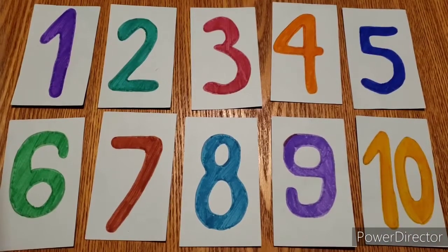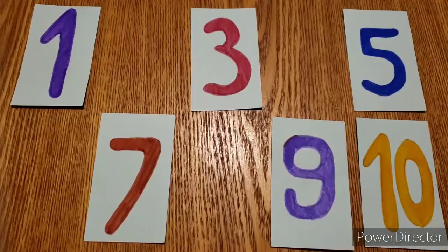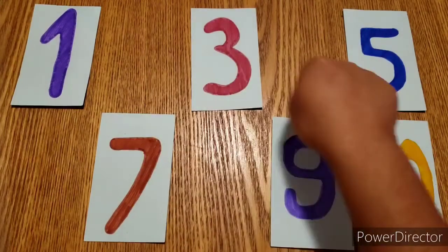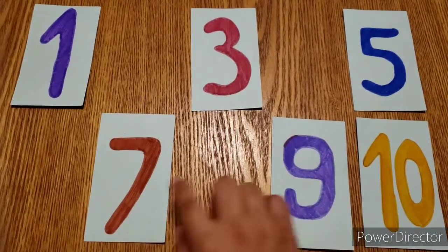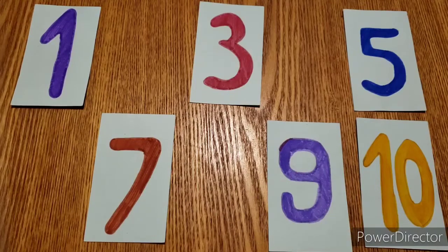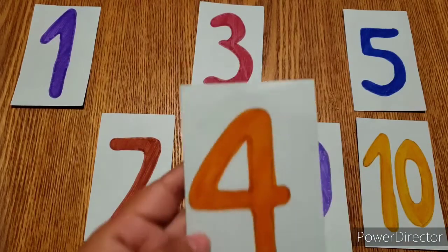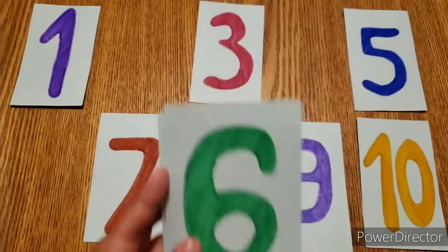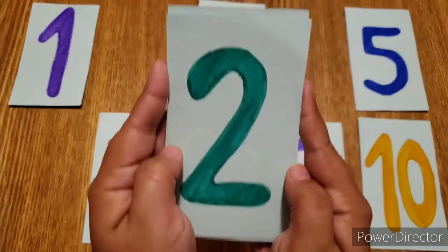So here are the numbers one through ten. Now let's take a look at this. We have a few missing numbers and we need to figure out which number goes here, here, here, and here. So let's get started. The missing numbers are four, eight, six, and two.